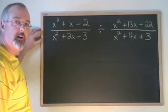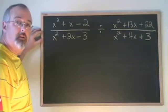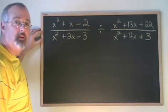When we divide algebraic fractions, it works the same way as when we divide regular fractions. You turn the second fraction upside down and you multiply instead.